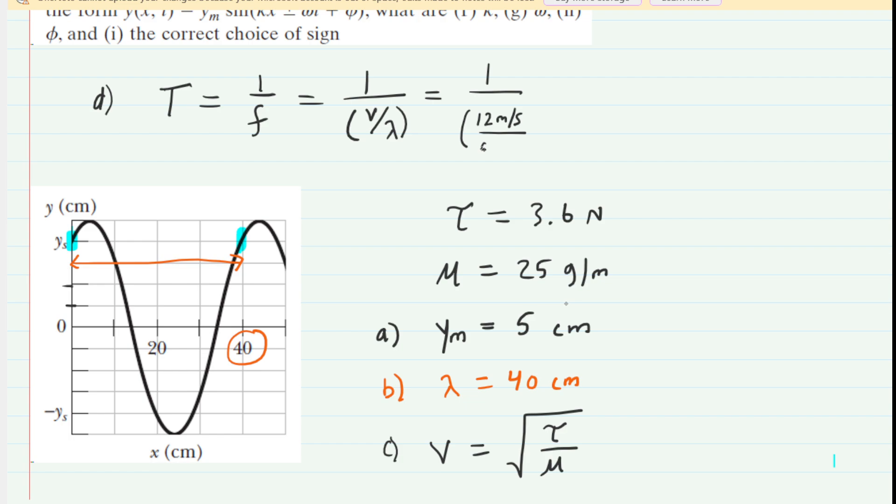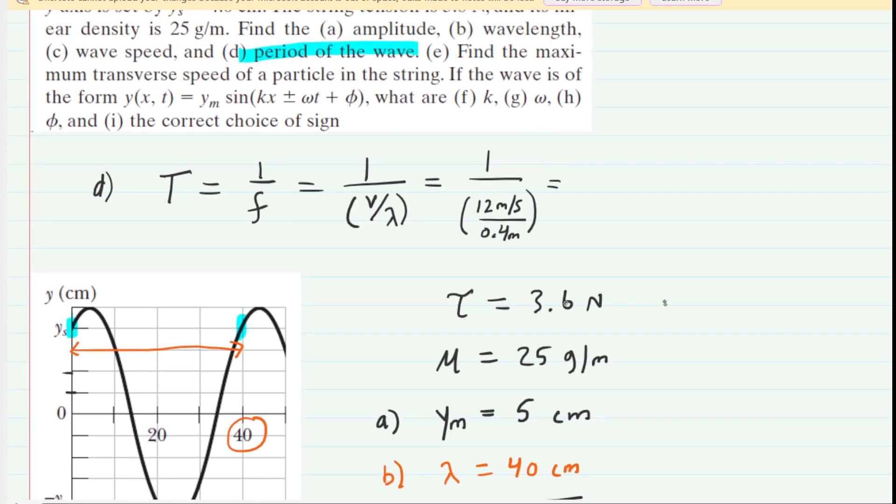Make sure you divide that by 100 to get it into meters. So that would be 0.4 meters. So also be careful about plugging that into your calculator. But when you do so, you would get 0.0333, approximately. And that is the period. That is measured in seconds. And that is the correct answer to part D of the question.